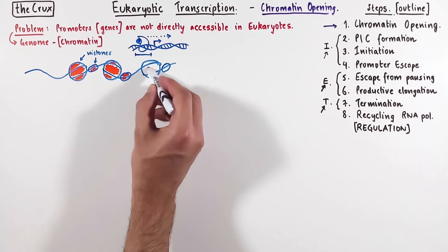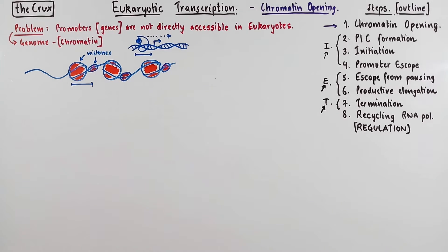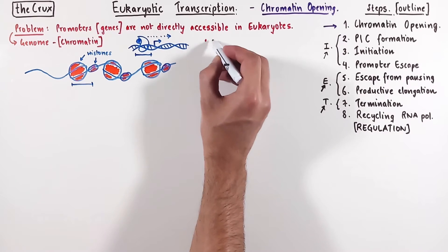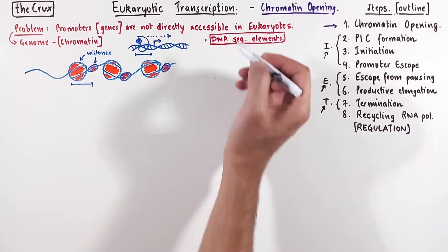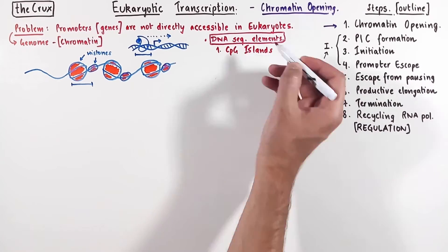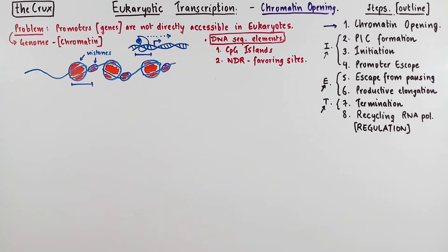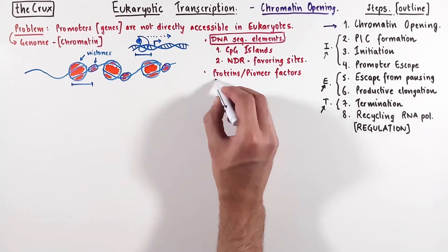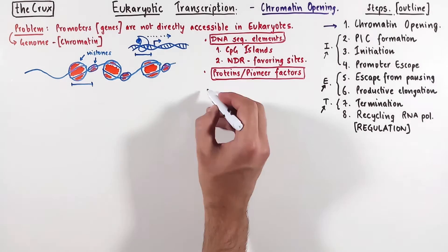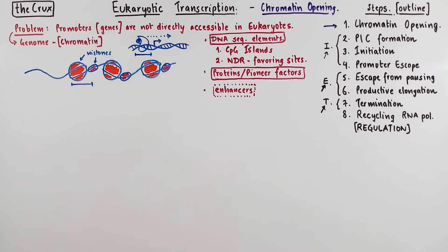How does the eukaryote make its promoter free of these histones, such that transcription can begin? There are two broad ways to do this. The first is via the inherent DNA sequences, and we'll see two types: CpG islands and nucleosome depleted regions. The second major mechanism is via proteins known as pioneer factors. Finally, I will talk about enhancers and how their additive effect can help solve the chromatin problem. Let's start by discussing CpG islands.